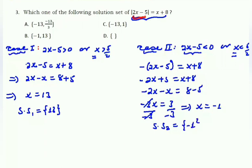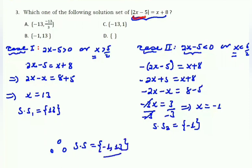The overall solution set is the union of both cases: minus 1 and 13. Therefore our answer is B.